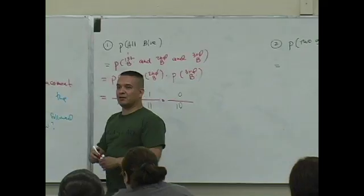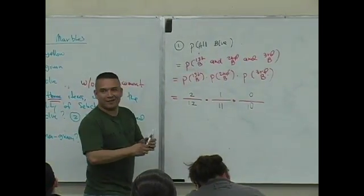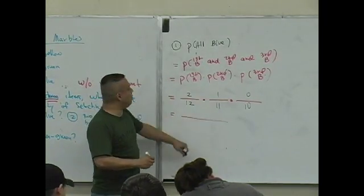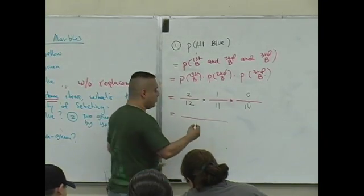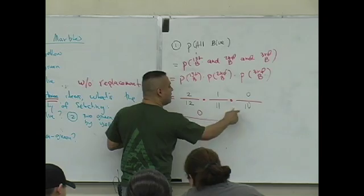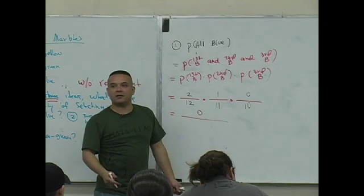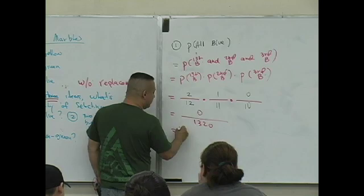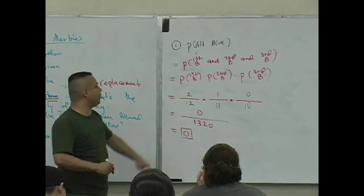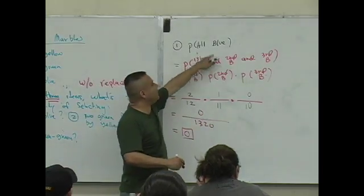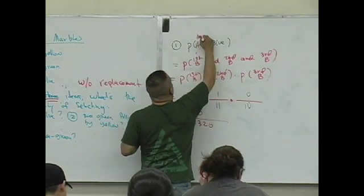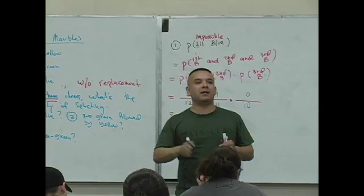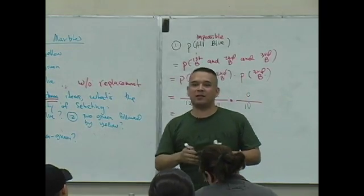What do you guys know about this situation? How do you multiply fractions? Across. What is two times one times zero? What is twelve times eleven times ten? Well, who cares — it's actually one thousand three hundred and twenty. It doesn't matter because zero divided by any number is zero. What does it mean if you have a probability of zero? The event is impossible. And if you think about it, there's no way you can select three blue marbles from a bag without replacement since there's only two.